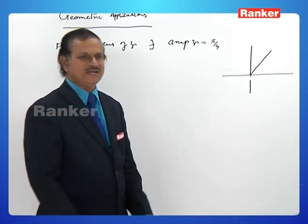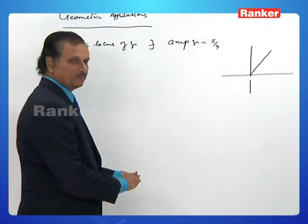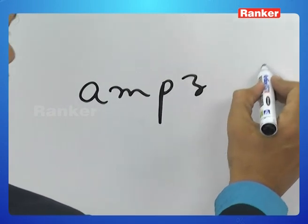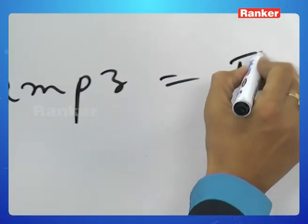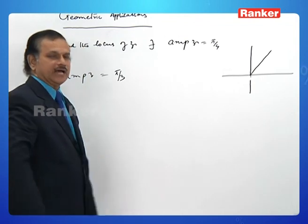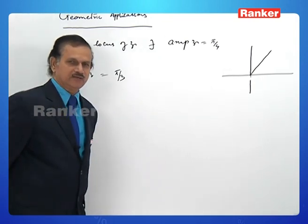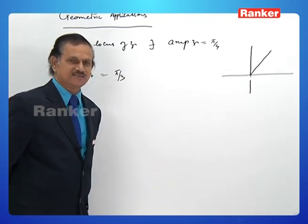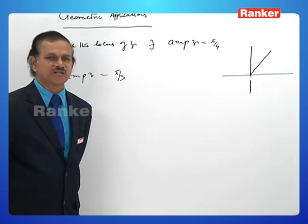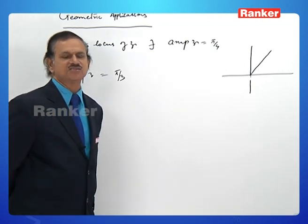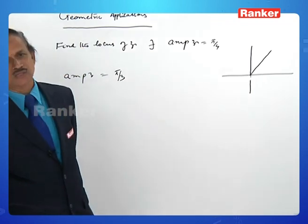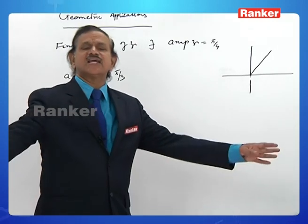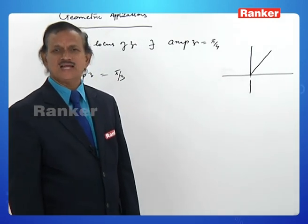For another example, suppose amplitude of z equals π/3. Then tan⁻¹(y/x) = π/3, so y/x = tan(π/3) = √3, giving y = x√3. The locus is a straight line passing through the origin inclined at 60 degrees with the positive x-axis. If no further information is given, leave the locus as that.